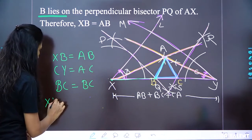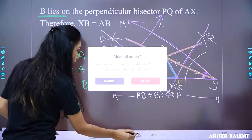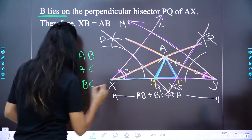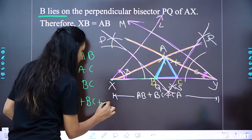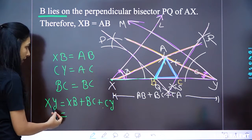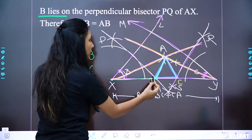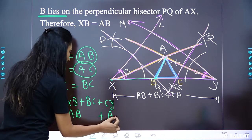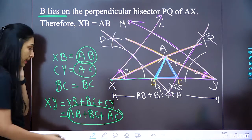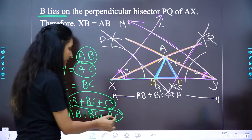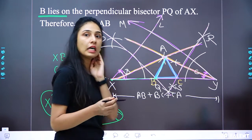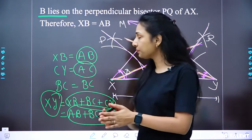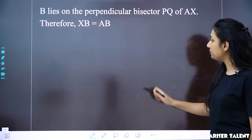So XY equals XB + BC + CY. Substituting: XB = AB, CY = AC, and BC = BC. Therefore AB + BC + AC equals XY, which was given as the perimeter. This confirms the construction satisfies the perimeter requirement.